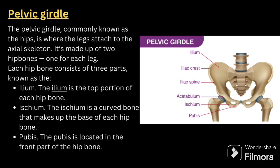Next comes the pelvic girdle, commonly known as the hip. This is where the legs attach to the axial skeleton. It is made up of two hip bones, one for each leg. Each hip bone consists of three parts: the ilium — the top portion of each hip bone; the ischium — a curved bone that makes up the base of each hip bone; and the pubis — located in the front part of the hip bone.